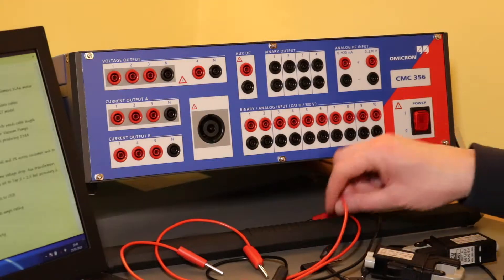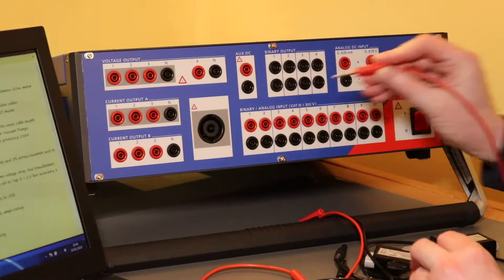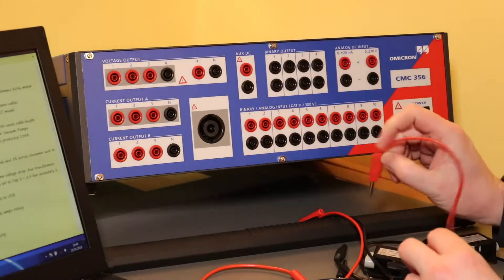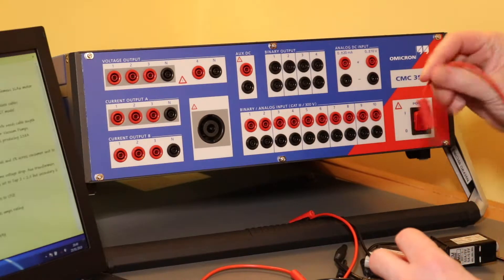Okay, so I'm just going to show how the Omicron is wired up to provide voltage and current outputs into these inputs that the analyzer will use to make the measurements.